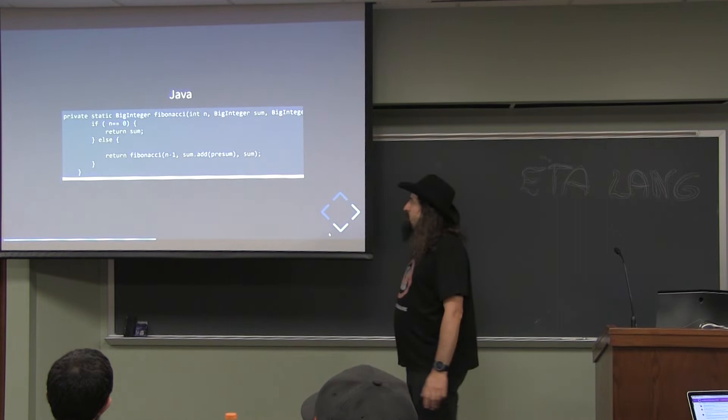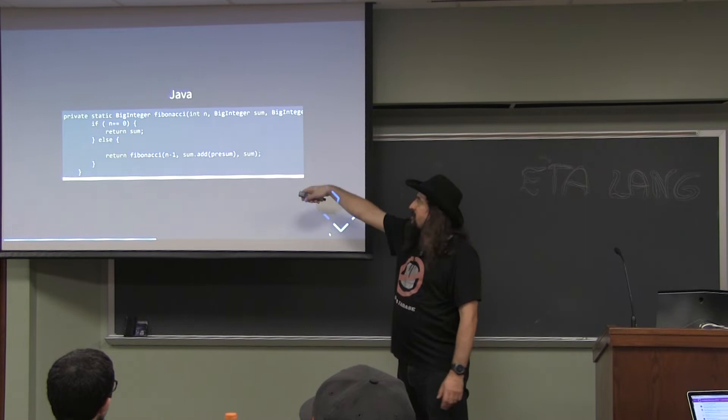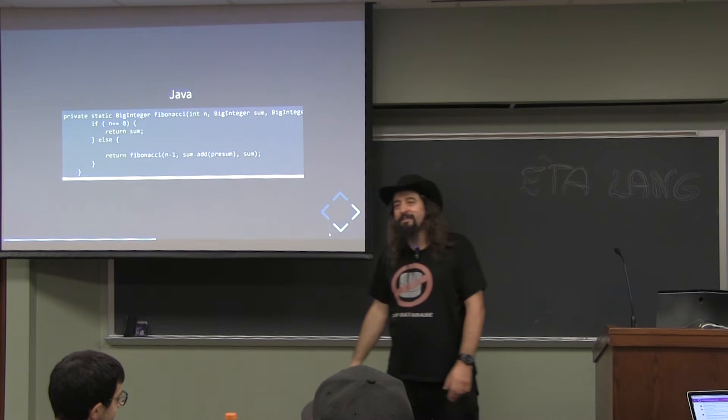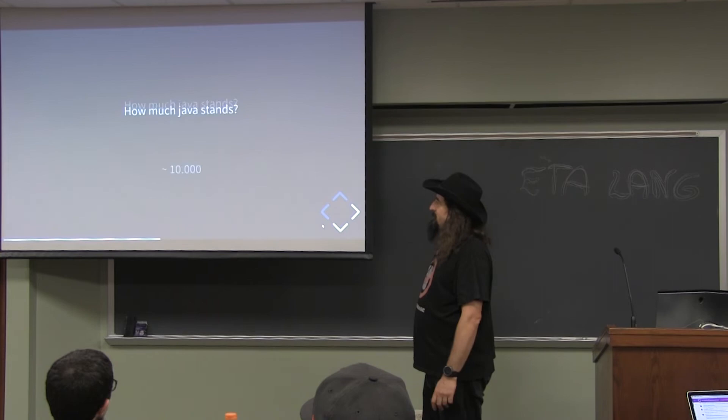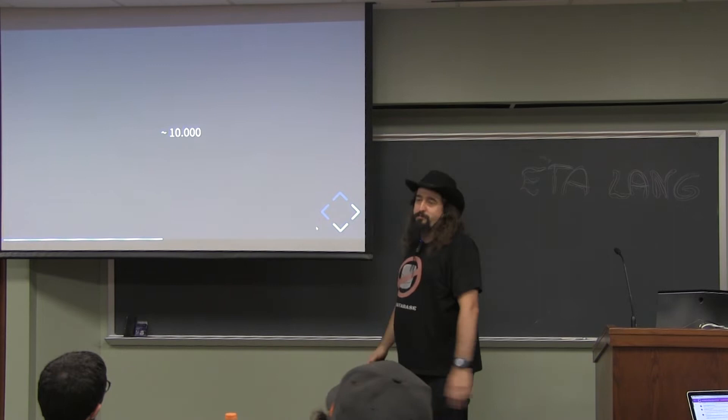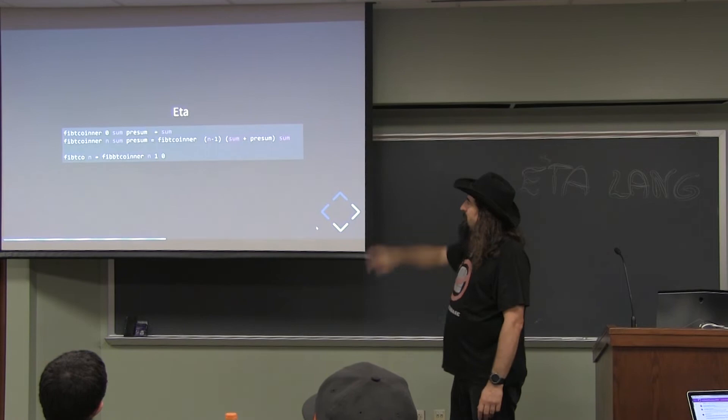If we write the same in Java, how many recursive calls can it survive? On the standard stack size — which you can change, by the way — it's like 10,000 iterations. It's actually not that bad. So I tried the same with ETA to see if it survives more than 10,000 on the standard JVM. I ran it and got a result. This is probably one of the worst Fibonacci sequences you've ever seen.